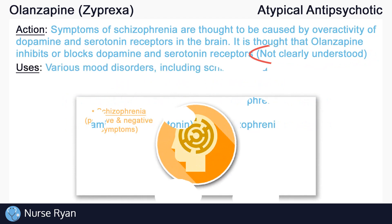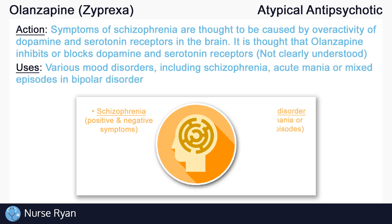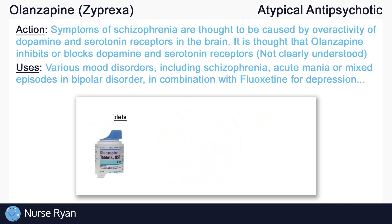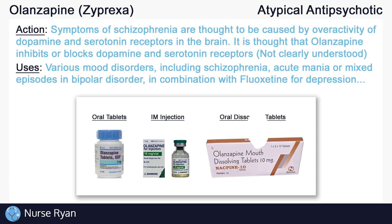Olanzapine is used in the management of various mood disorders, including schizophrenia. As an atypical antipsychotic, olanzapine can treat both positive and negative symptoms of schizophrenia. Olanzapine can also be used in the treatment of acute mania or mixed episodes associated with bipolar disorder, in combination with fluoxetine for depression, and more. Olanzapine is most often administered PO or by mouth, but can be administered IM in specific cases. One way to improve adherence in patients who are in an acute stage of illness and refusing regular PO or IM administration can be to administer the orally disintegrating or dissolving olanzapine tablets.